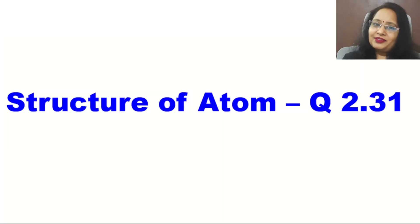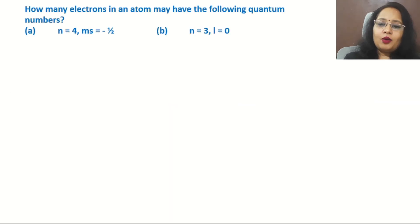Hello and welcome to Chemistry Nuggets where you can polish your knowledge and clear those doubts. Today's video is question number 2.31 from NCERT textbook class 11, chapter Structure of Atom. The question is: How many electrons in an atom may have the following quantum numbers? Part A: n=4, ms=-1/2.